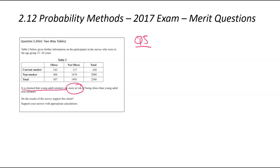Sometimes even excellent questions as well. So we've got a two-way table, and we're looking at obese versus current and non-current smokers, and it has been claimed that young smokers were more at risk of being obese than young adult non-smokers. So what that's trying to say is someone's claimed that if you smoke, you are more likely to be obese when compared with if you don't smoke. Basically, we now need to look into the data. Do the results from the survey support this claim?